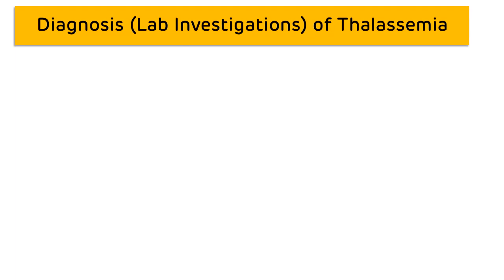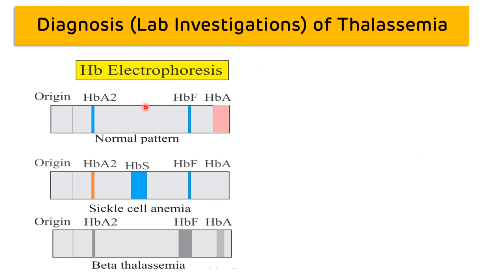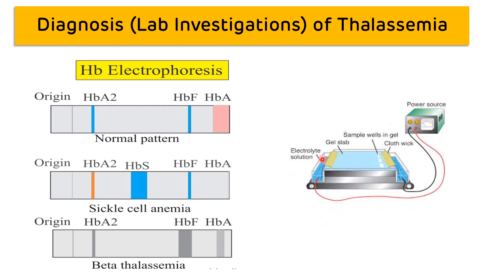For lab investigations, the gold standard for diagnosis of thalassemia is hemoglobin electrophoresis (HB electrophoresis). In a normal person, the band of HB A is broad and large compared to HB F. But in thalassemia, the band of HB F will be larger and broader compared to HB A. This apparatus is used to carry out electrophoresis for thalassemia.